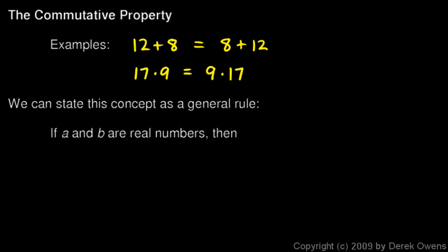We can state this idea as a general rule. Instead of looking at these specific examples with those particular numbers, we can state this as a general idea using variables. If a and b are real numbers, then a plus b is always going to equal b plus a. Instead of just these two numbers that we were using, a and b can be any numbers on the number line.